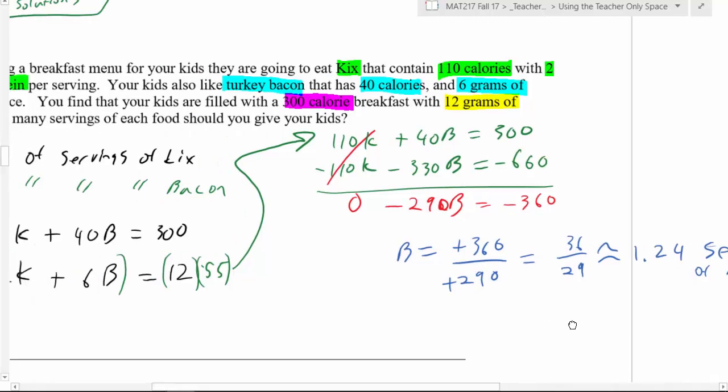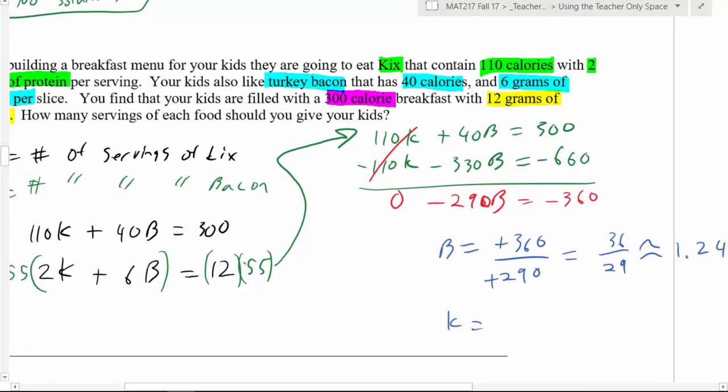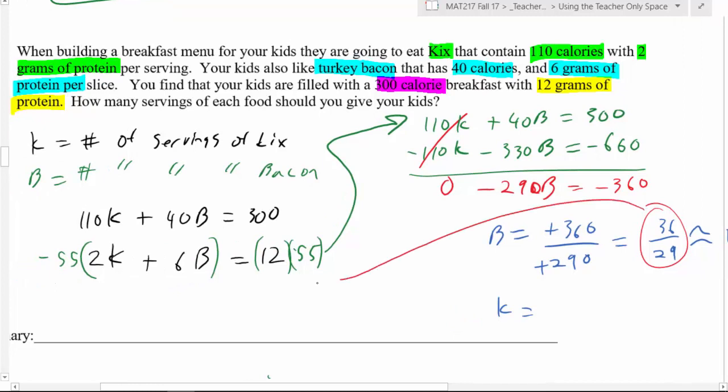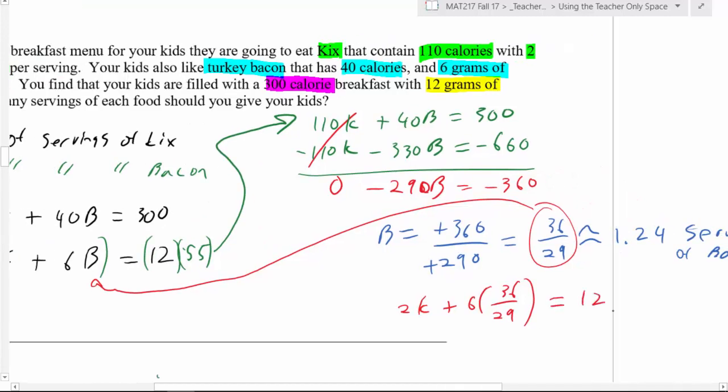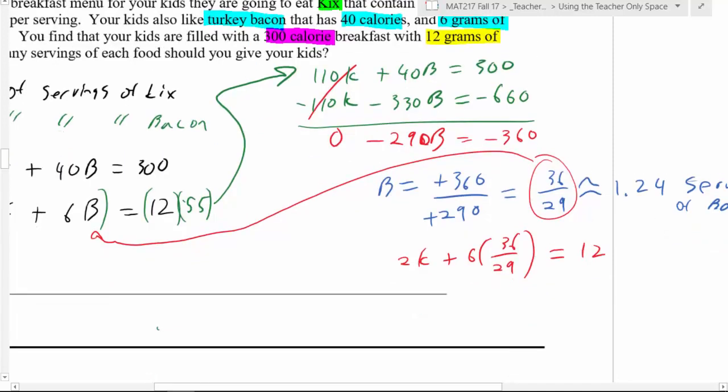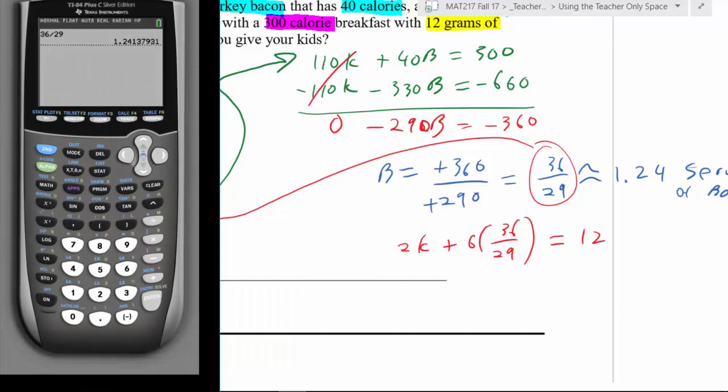Now going forward to get the other variable, to get our K, do not use your rounded values. Do not use your rounded values. That is a recipe for disaster. Use the exact amount of 36 29ths, and then round your solution. So when I go ahead and substitute this back in for B, solving for K, where I have 2K is equal to, well not equal to, plus, plus 6 times 36 29ths equals 12. When I'm solving this portion, I'm gonna use the fraction. And feel free, I mean, this class you are going to need to work with fractions and whatnot, but it's not going to be terribly important that you can do it all by hand. So if you need, you know, when you're doing something like this, you want to use your calculator to help you out, that's absolutely fine. So we get that.